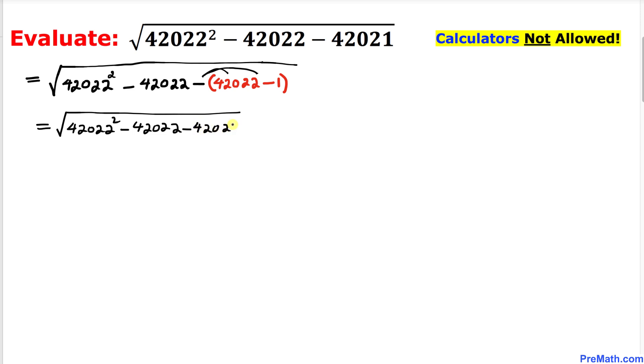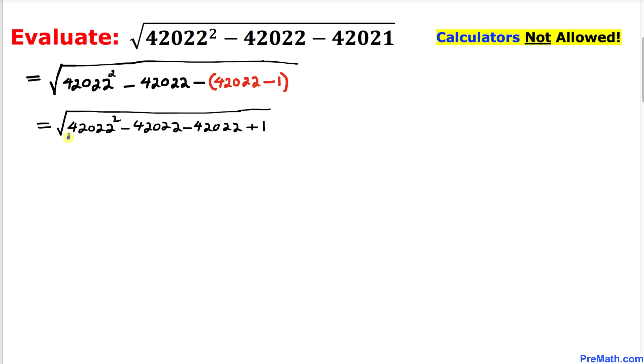And this negative and negative is going to become positive 1. And now we can see that these numbers are identical - 42022. Likewise, these three numbers are the same. So let me go ahead and make a substitution.